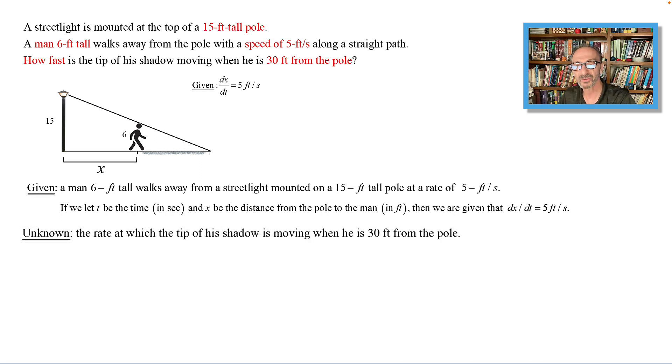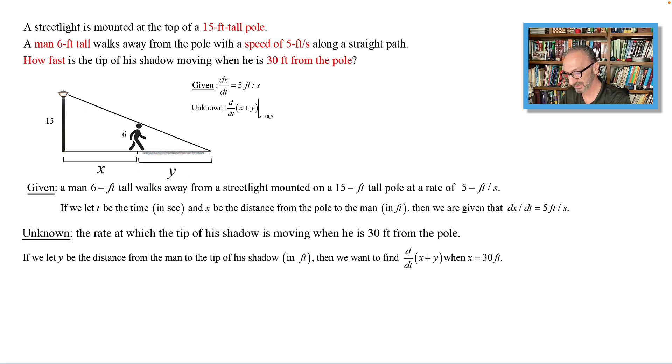Unknown: the rate at which the tip of the shadow, that's this point right here, is moving when he is 30 feet from the pole. If we let y be the distance from the man to the tip of the shadow, that's this part right here, in feet, then we want to find d/dt of x plus y when x equals 30.